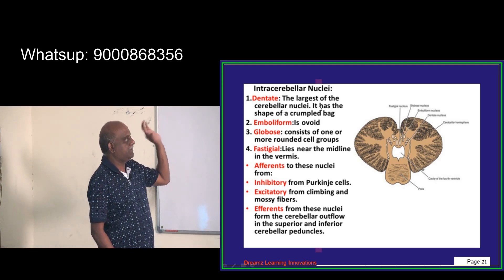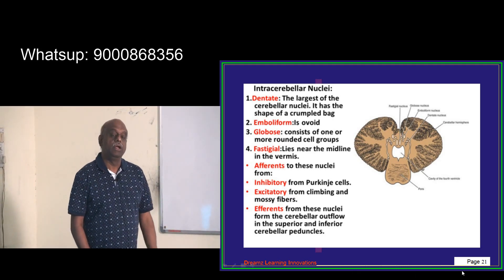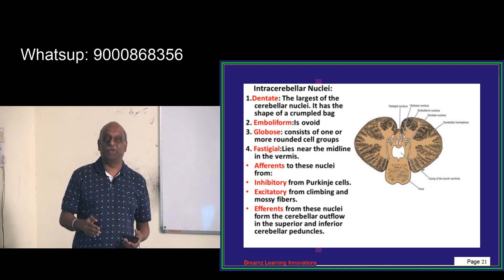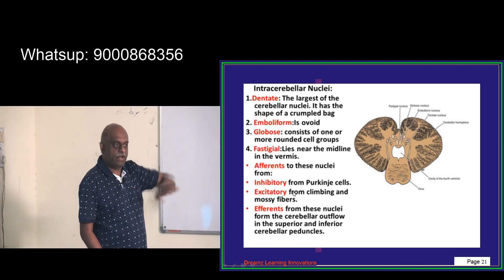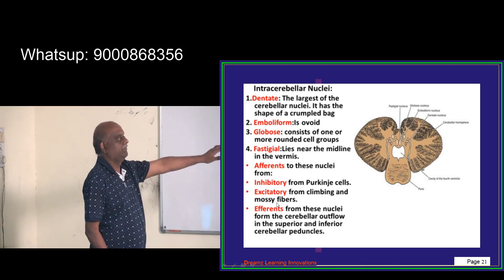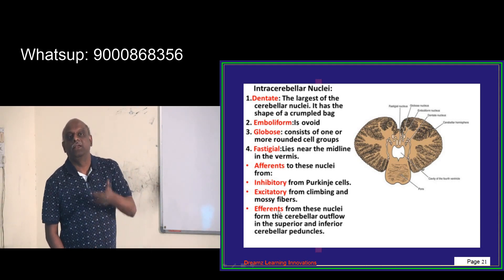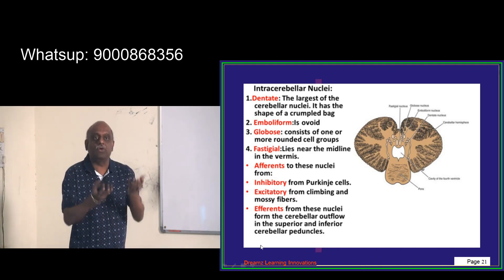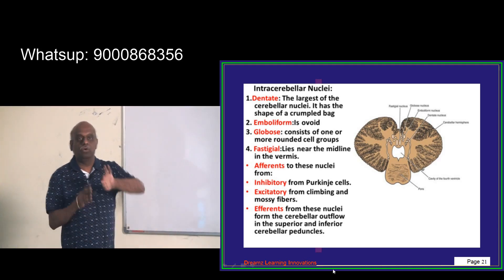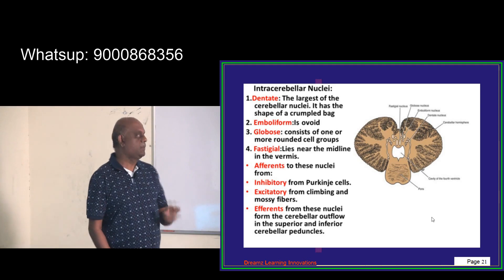These nuclei receive afferents from two sources. Purkinje cells bring inhibitory input to the nuclei, while climbing fibers and mossy fibers bring excitatory input. From these nuclei, the efferents leave the cerebellum through the superior cerebellar peduncle and the inferior cerebellar peduncle.